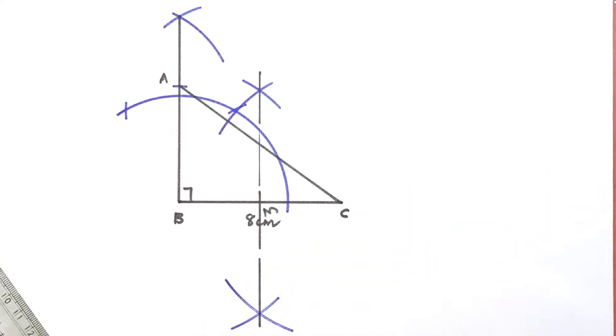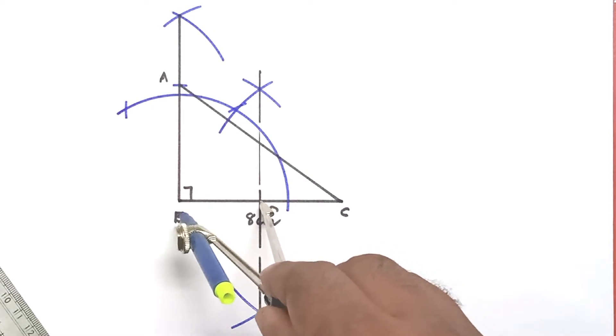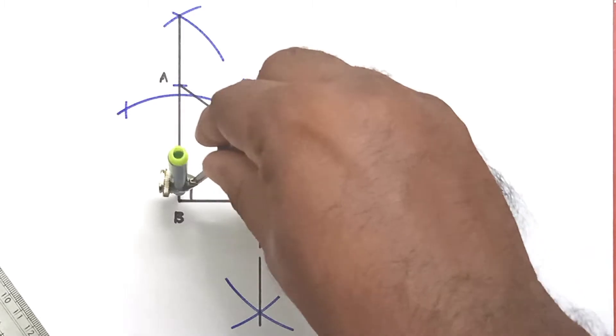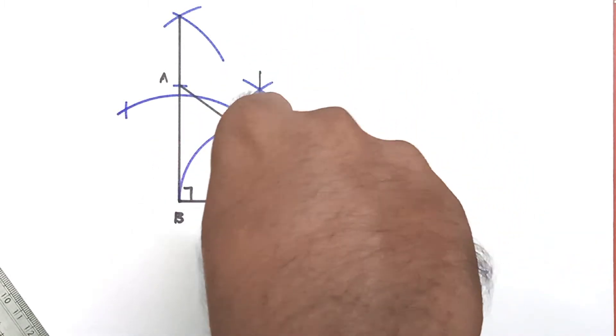Let M be the midpoint of BC. Take M as the center and BM as the radius, draw a circle.